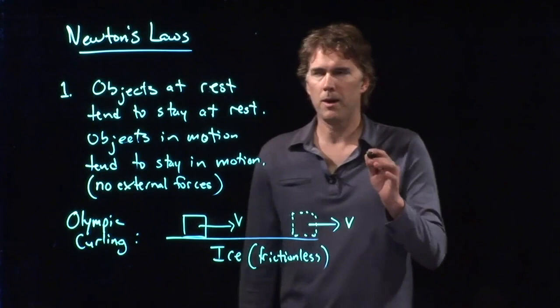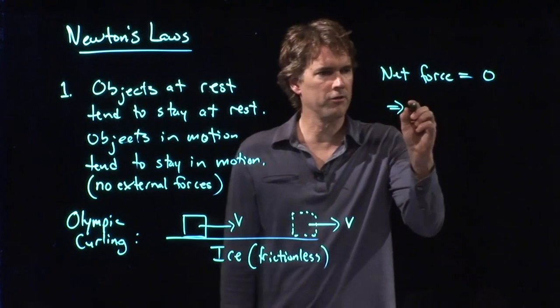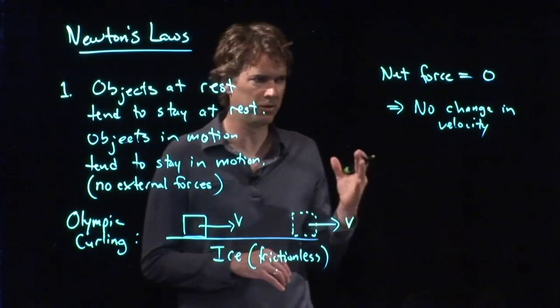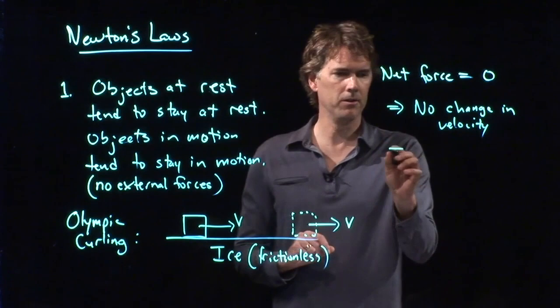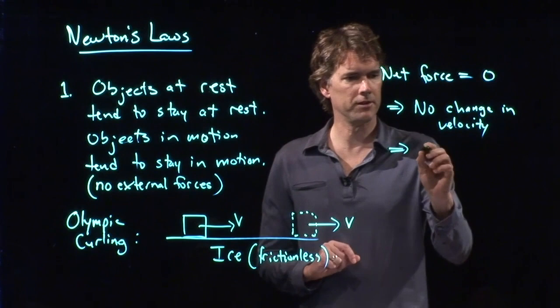So that's Newton's first law. One way to think about it is this: the net force is equal to zero, and therefore there is no change in velocity. That velocity could be zero, and at a later time it would still be zero. Or it could be some value, and at a later time it would still be that value. We know that change in velocity is acceleration — A is ΔV over ΔT — so this must mean that there is no acceleration.